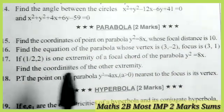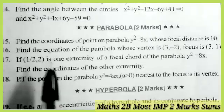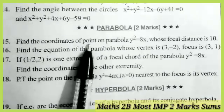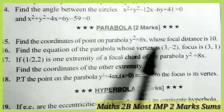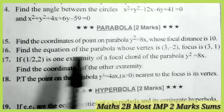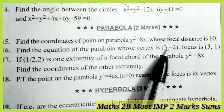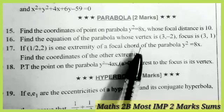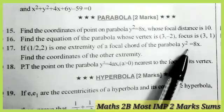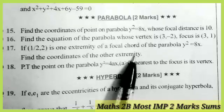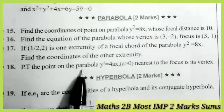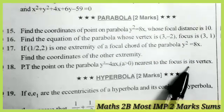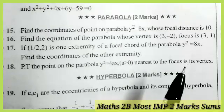Now see the parabola. These four are the most frequently repeating questions. First one: find the coordinates of the point on the parabola whose focal distance is equal to 10. Next one: find the equation of the parabola where vertex and focus are given. Next one: if (1/2, 2) is one extremity of a focal chord of the parabola y² = 8x, find the coordinates of the other extremity. Next one: prove that the point on the parabola y² = 4x nearest to the focus is the vertex.